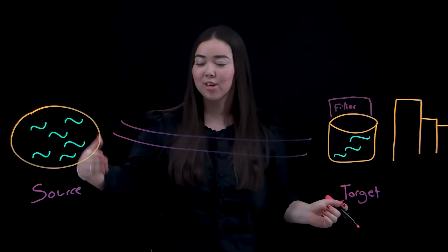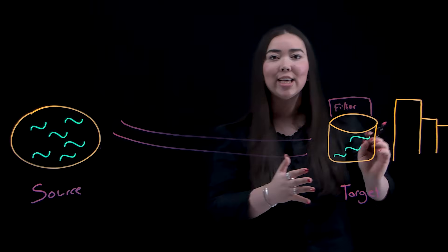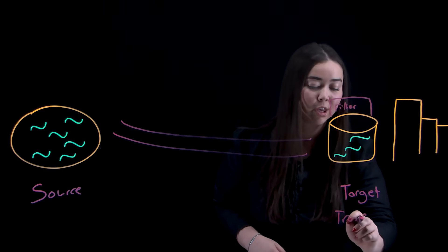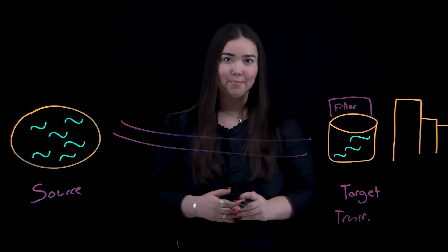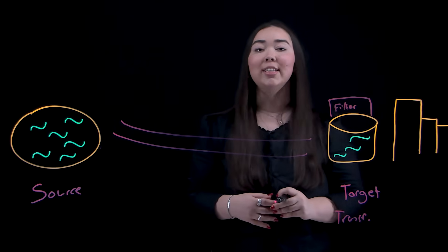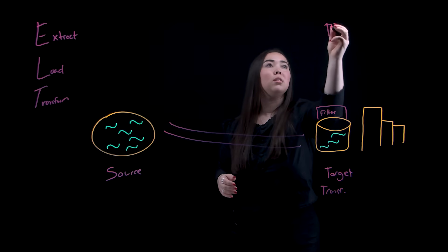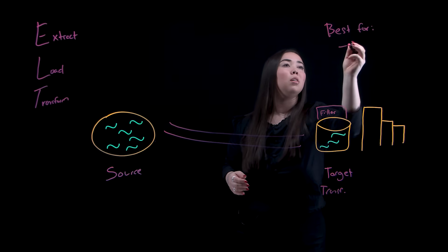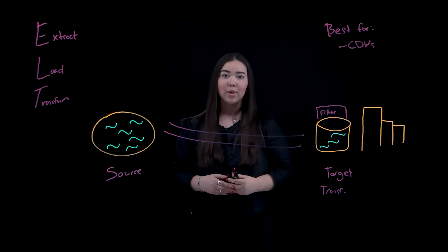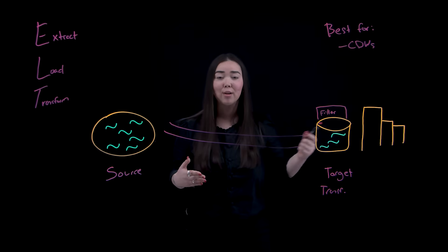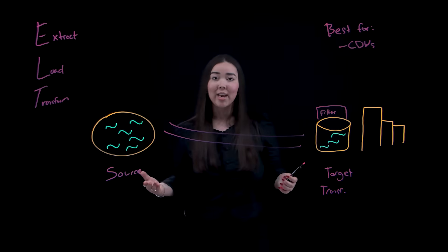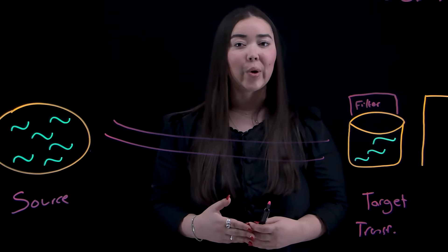In data terms, we extract raw data from the source, load it directly into a warehouse or lakehouse, and then transform using the compute power of that cloud system, like SQL engines or pushdown processing. ELT is great when you're dealing with modern cloud data warehouses and you want to take advantage of their scalable compute. However, if your data volumes spike or become unpredictable, costs can quickly balloon.